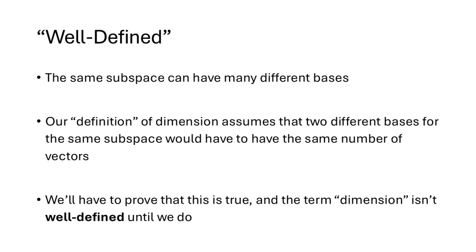Now the same subspace can have many different bases, and our definition of dimension assumes that any two different bases for the same subspace would have to have the same number of vectors. But we don't know that that's true from first principles, so we're going to have to prove it. And until we do, the term dimension isn't well-defined. It's important that in mathematics, definitions don't assume any facts that we haven't proved to be true.